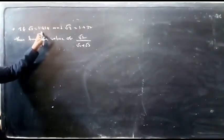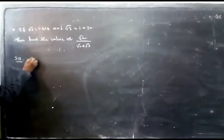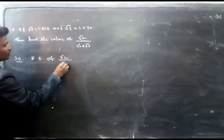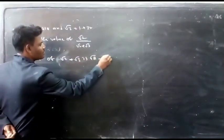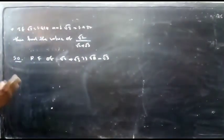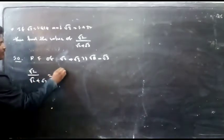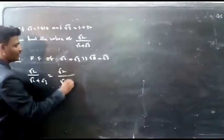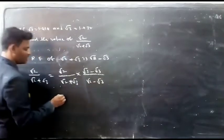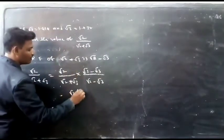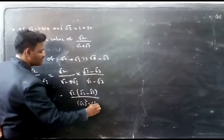Given: √2 = 1.414. Rationalize √2 / (√2 + √3). The rationalizing factor of (√2 + √3) is (√2 − √3). Multiply numerator and denominator by (√2 − √3): √2(√2 − √3) divided by (√2 + √3)(√2 − √3), which is in the form (a + b)(a − b) = a² − b².